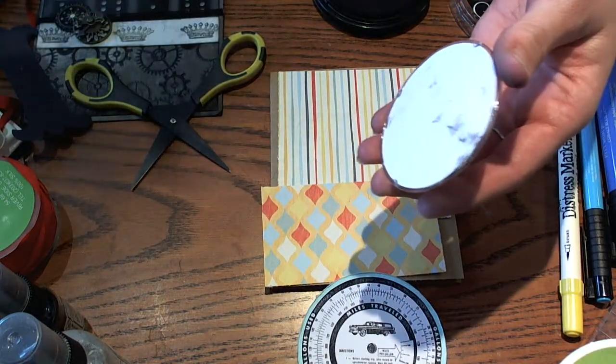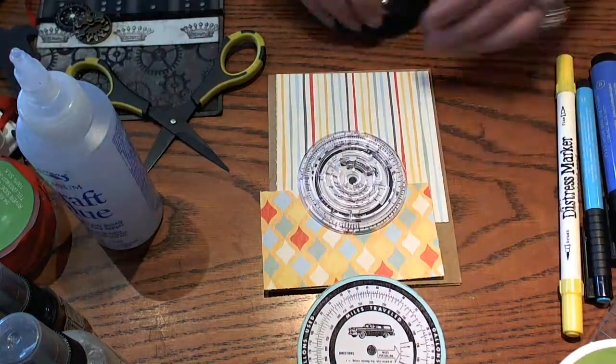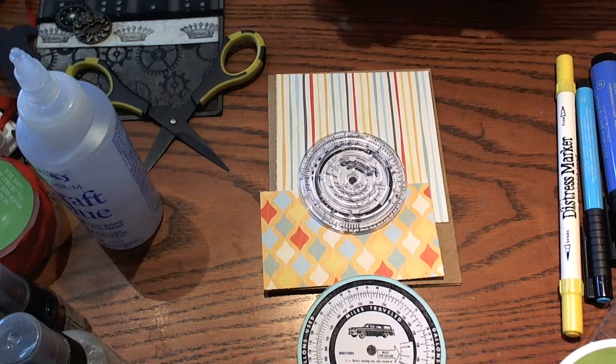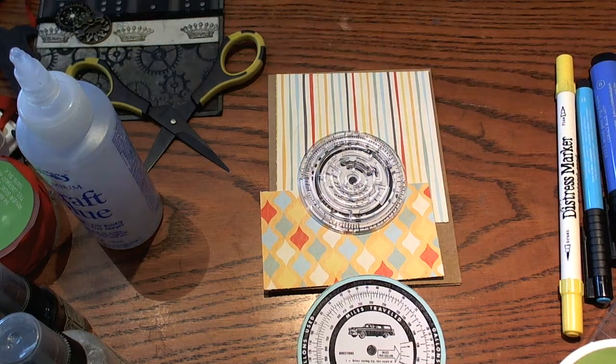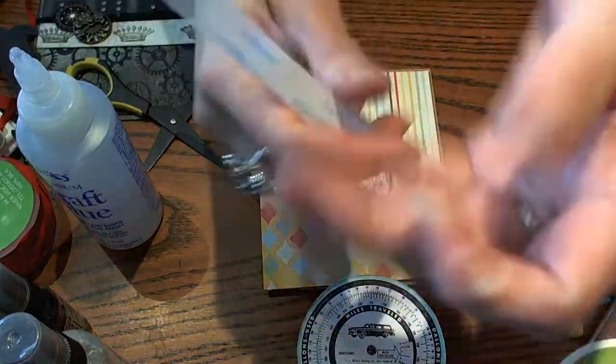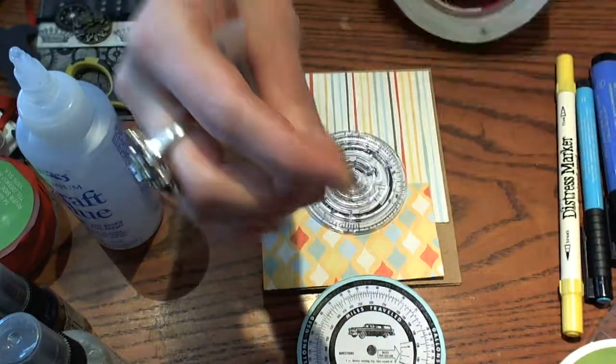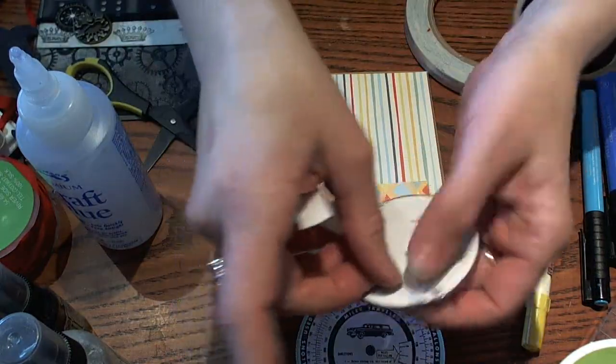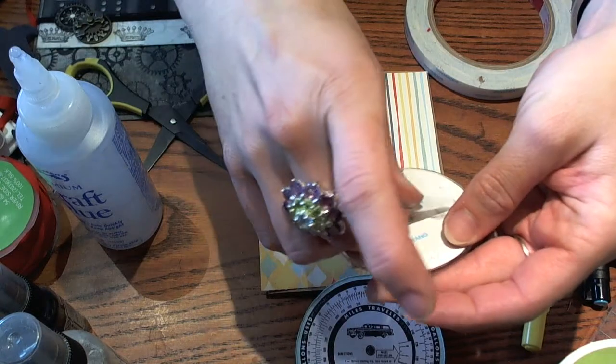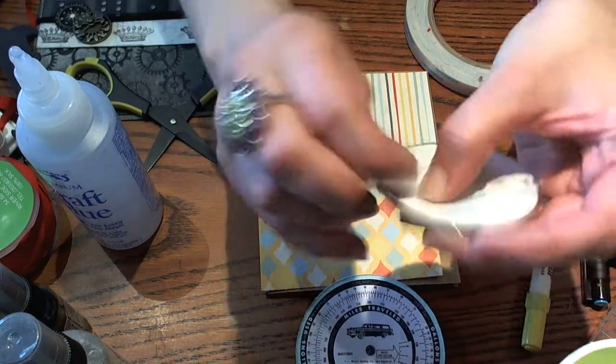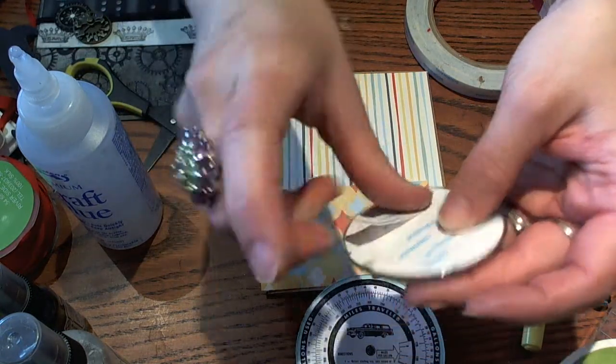And then we're going to attach the game piece right on top of this. We're going to use some of this score tape. We're just going to attach this right to the back of our game piece. We want to make sure that we do a couple strips here because we want this to be nice and secure.